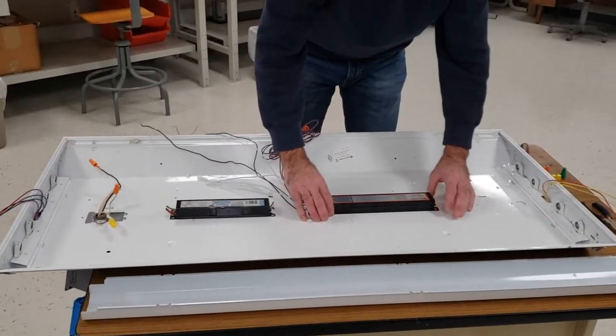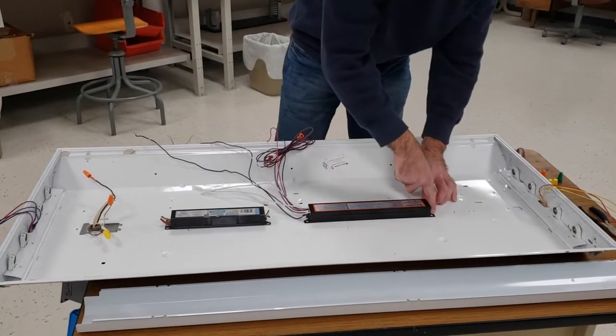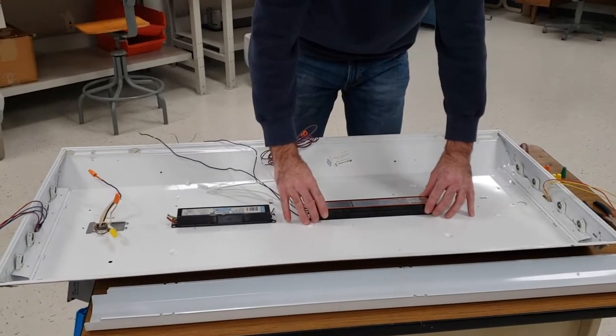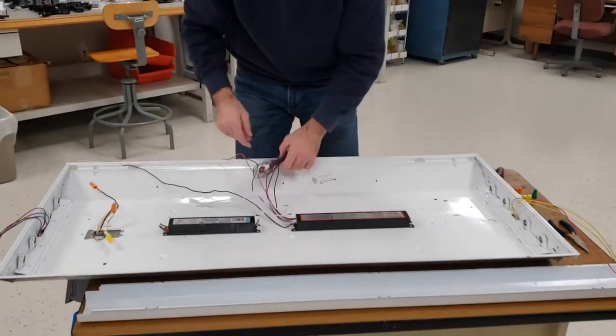So once you find your location you'll screw your screw in and you will hold your EMB driver in place. At that point you begin to separate your wires.